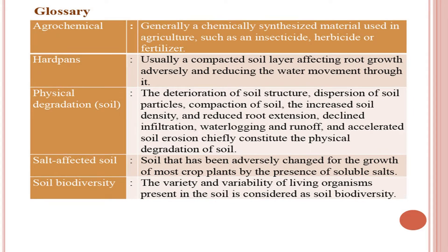Soil biodiversity: the variety and variability of living organisms present in the soil. Then soil degradation: the decline in soil physical, chemical, and/or biological qualities, usually caused by improper soil and crop management practices. Soil quality is the capacity of a specific kind of soil to function within natural or managed ecosystem boundaries, to sustain plant and animal productivity, maintain or enhance water and air quality, and support human health. This definition is given by the Soil Science Society of America.